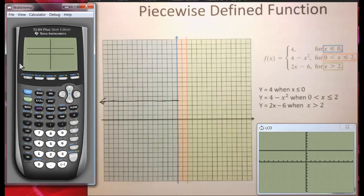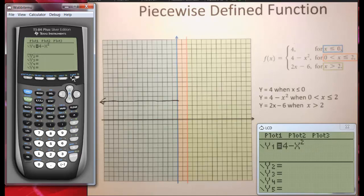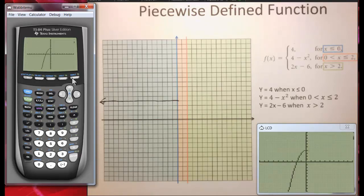Now, I'm going to go back here. I'm going to clear that out, and I'm going to put in 4 minus x squared. And I'm going to graph the part of that between x equals 0 and x equals 2.